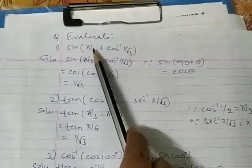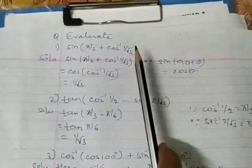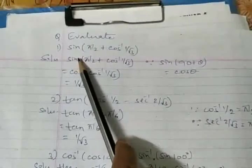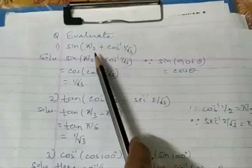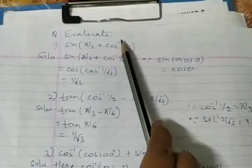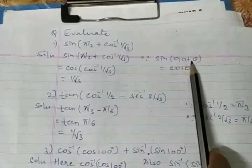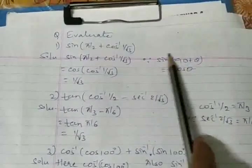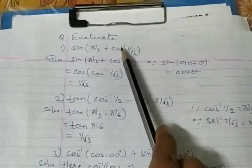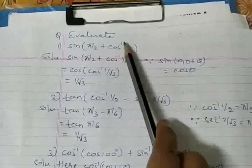So evaluate - now you can make out what is the importance of this term 'evaluate' and how many types of questions you can expect. First question: sin(π/2 + cos⁻¹(1/√3)). Do we know the exact angle for cos⁻¹(1/√3)? Because cos for 1/√3 - if we know the value, we know it for standard angles only given to 3 elements.